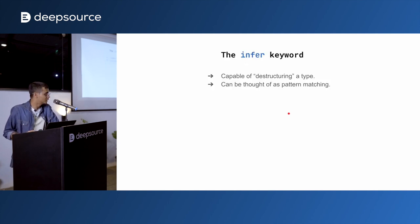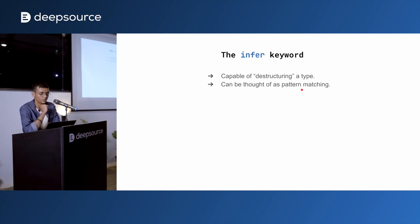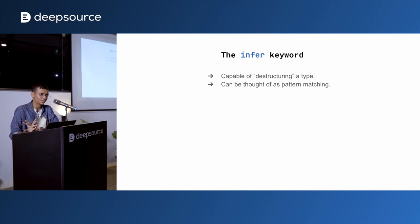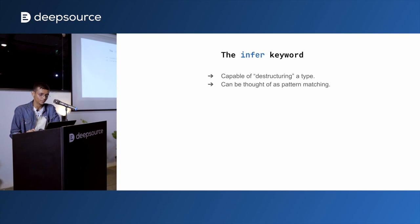Up next, we have the infer keyword. It's a more recent addition — TypeScript 4.8 or 4.9 — and it is capable of destructuring a type. We're all familiar with array and object pattern destructuring in JavaScript. But it turns out we can also destructure types. If you're familiar with functional programming — Haskell, Scala, OCaml, F# — you're familiar with pattern matching. You can also pattern match on types using the infer keyword.